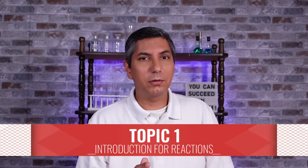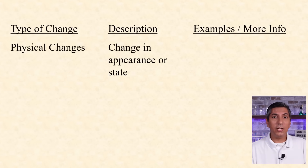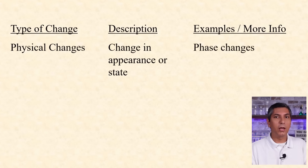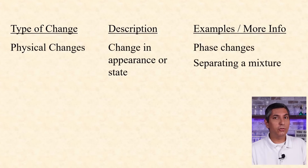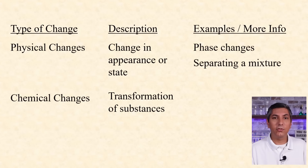There are two main types of changes. Physical changes involve the change in an object's appearance or its state. Phase changes like melting and boiling are physical changes, and anytime you separate a mixture, maybe by chromatography or distillation, that's a physical change. On the other hand, chemical changes involve the transformation of one or more substances into new substances. Chemical bonds are broken and formed in these chemical changes or reactions.